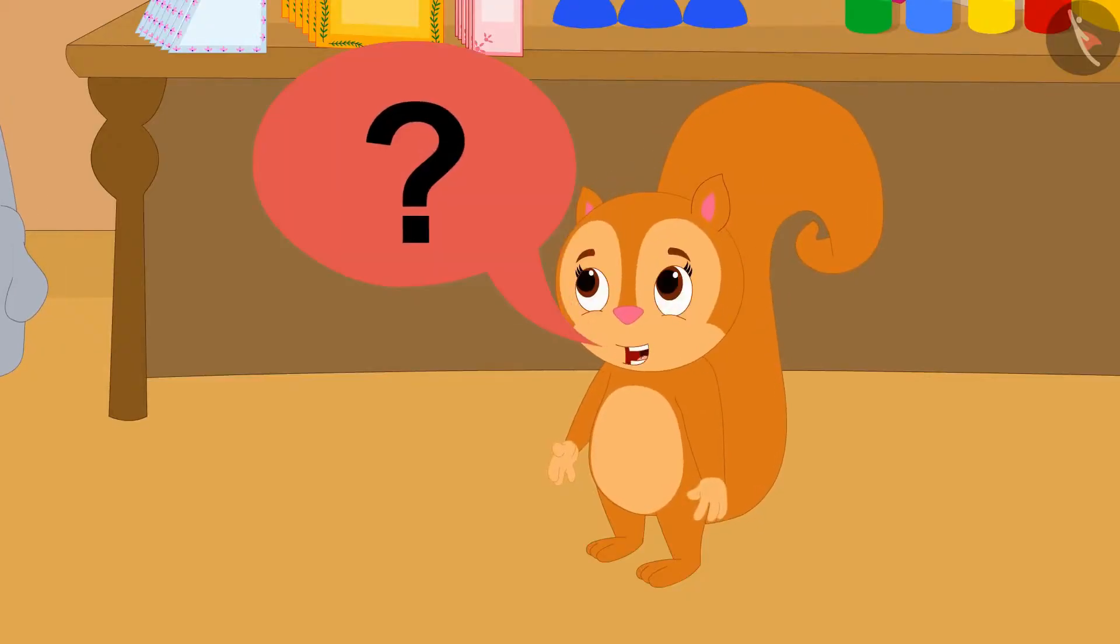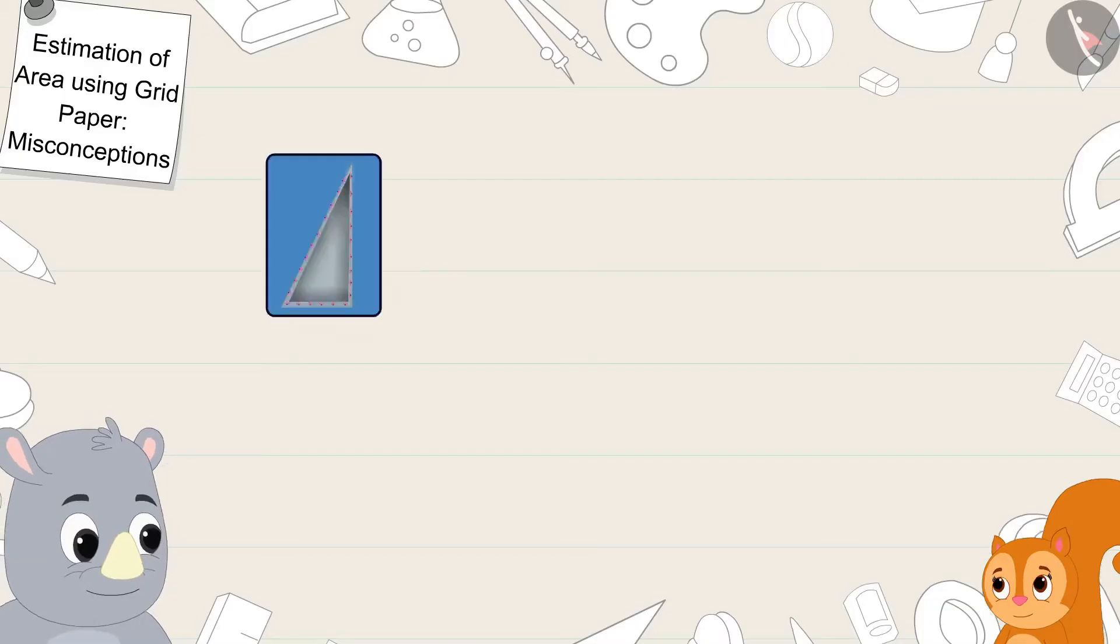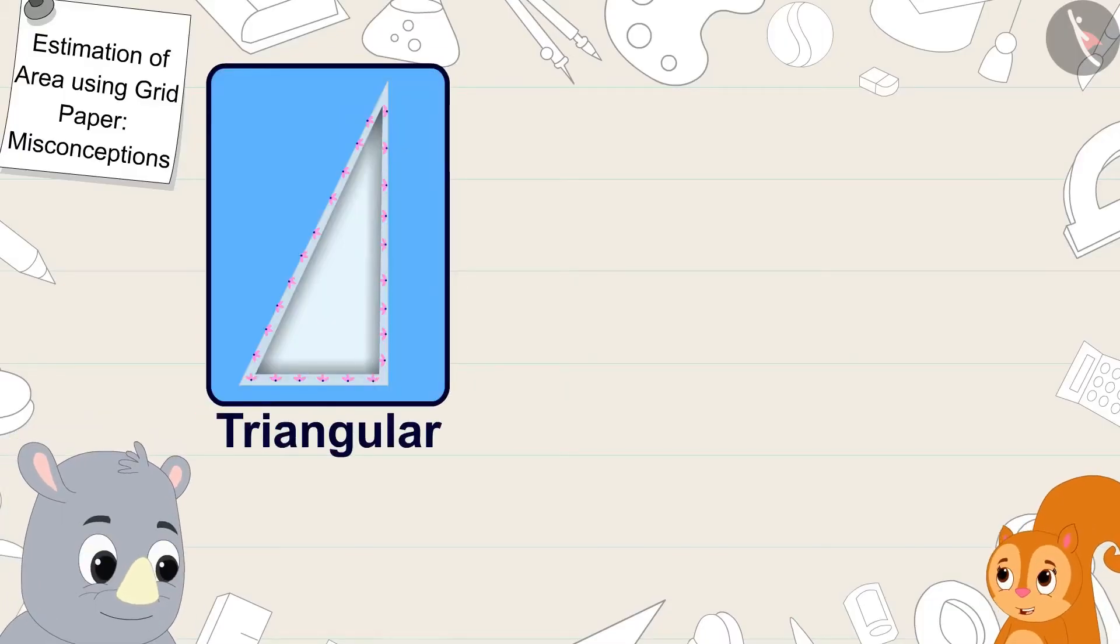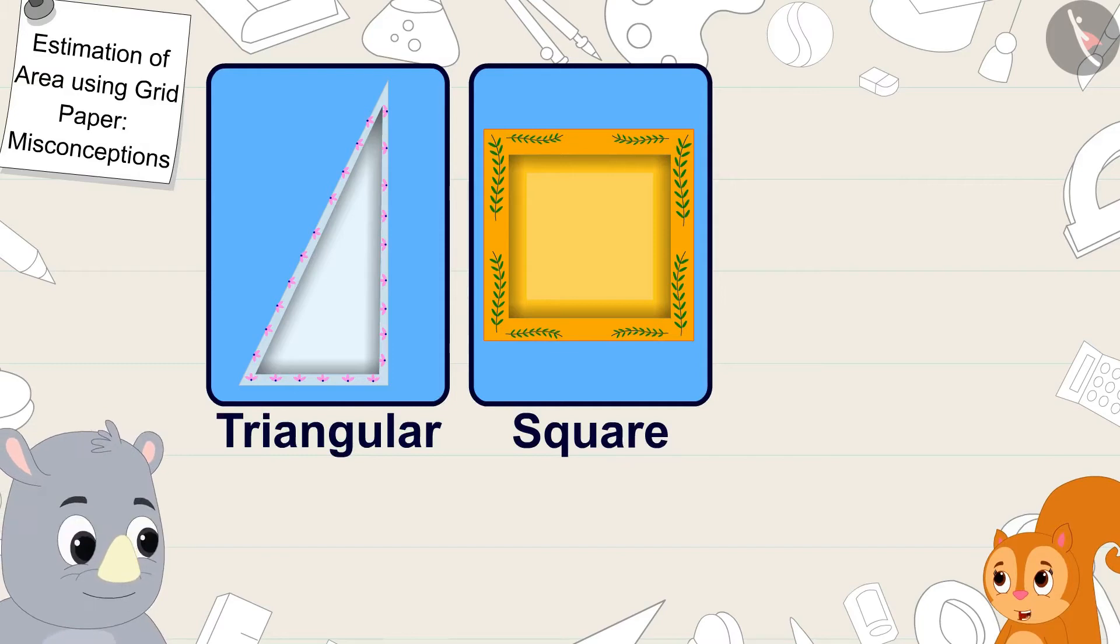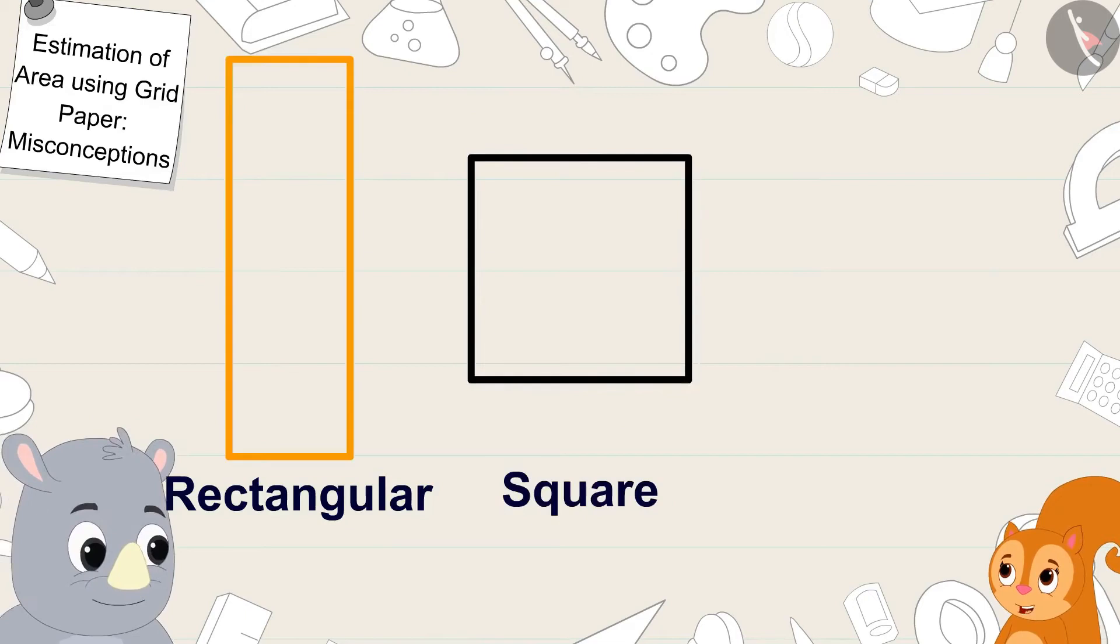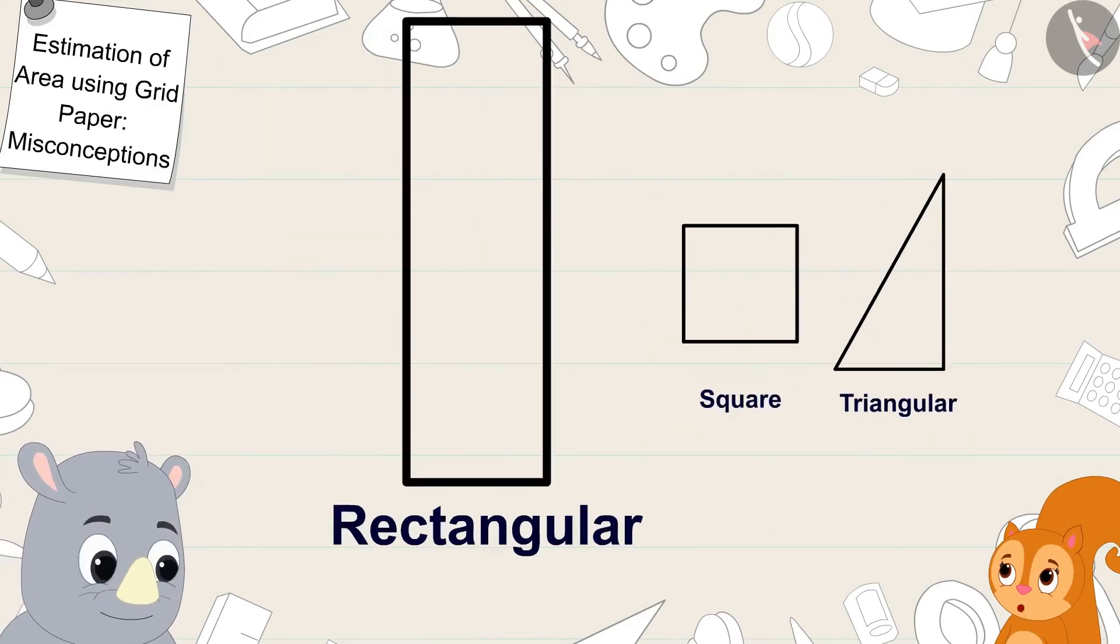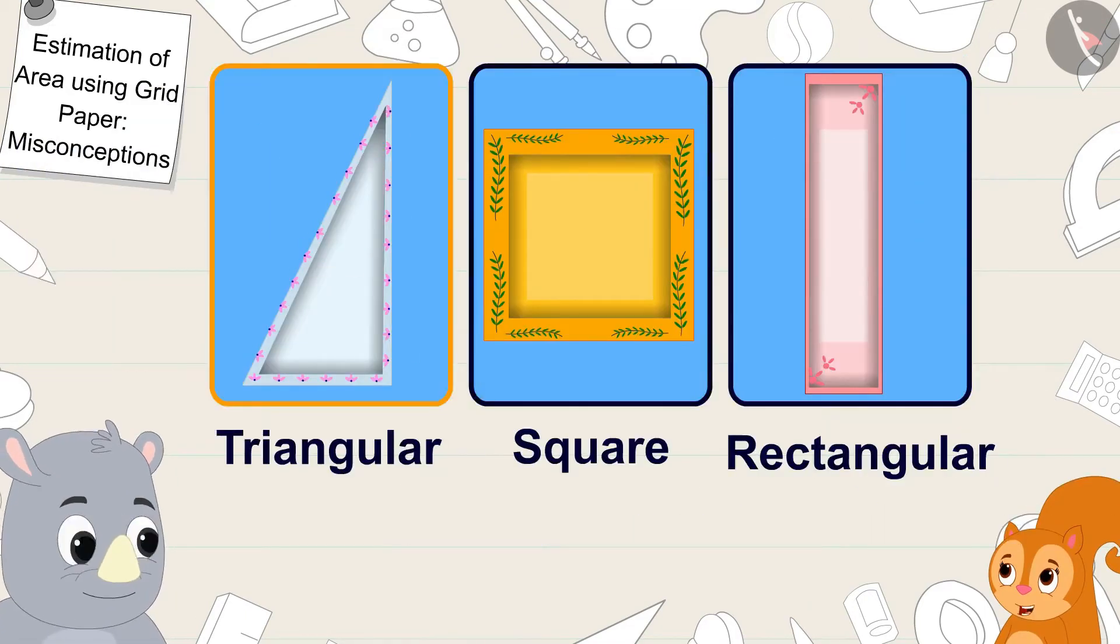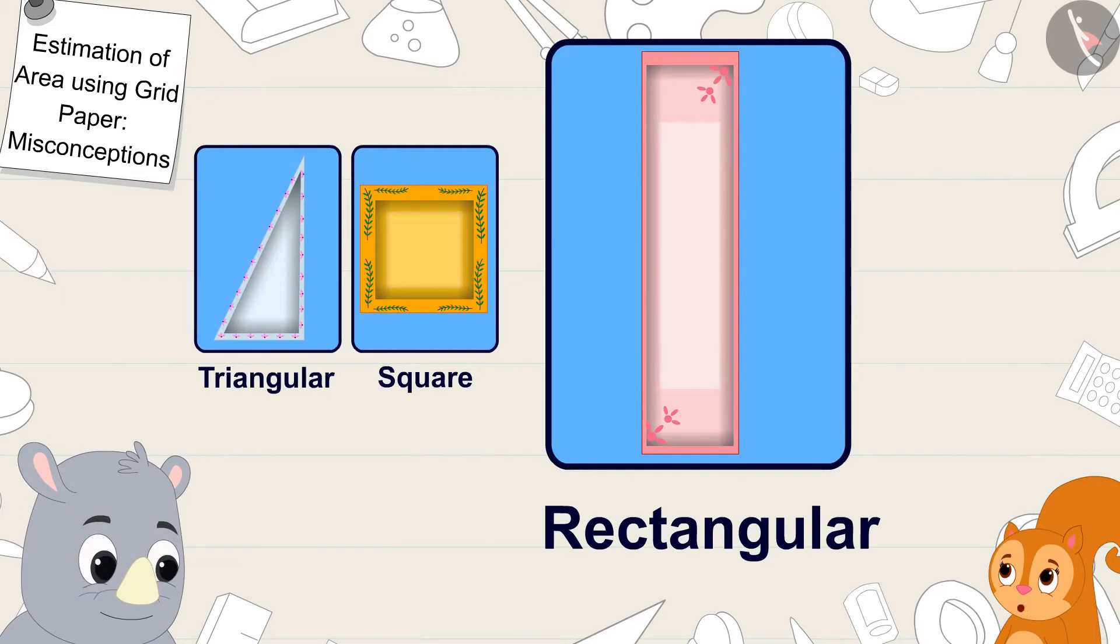But how is that possible Gaggoo? This plate is triangular, this one is square shaped and this plate is rectangular. Because rectangle is bigger than square and triangle, the rectangular plate is bigger than both these plates. Chanda said to Gaggoo.